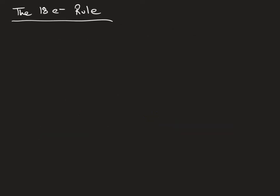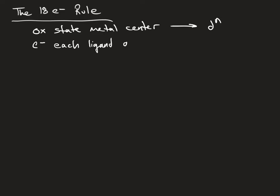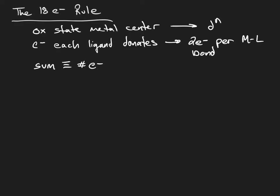When going through and counting electrons, what we're going to do is determine the oxidation state of the metal center and assign it the number of d electrons. We're then going to determine how many electrons each ligand donates based on the number of metal-ligand bonds there are, with each metal-ligand bond donating two electrons. We then sum these, and this gives us the number of electrons relative to the 18-electron rule.